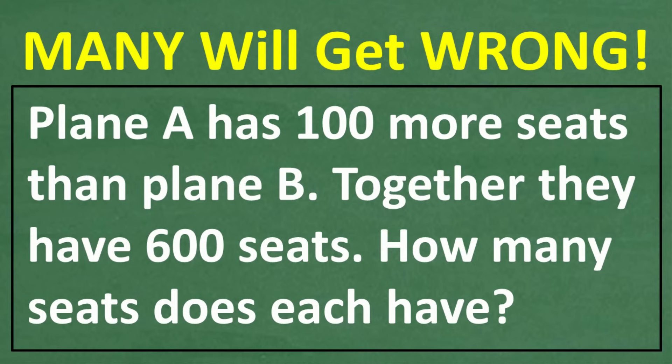Plane A has 100 more seats than plane B. Together they have 600 seats. How many seats does each plane have?